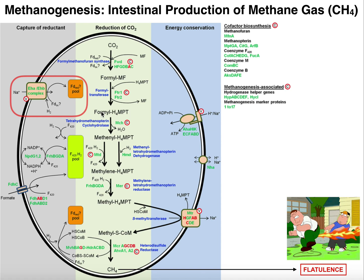This is now going to ultimately be cyclized into this molecule methenyl-tetrahydromethanopterin. This is catalyzed by tetrahydromethanopterin cyclohydrolase. We saw a cyclohydrolase that was present in tetrahydrofolate metabolism — this is basically the same enzyme that has multiple specificities — and it's going to cyclize this molecule into what's called methenyl-tetrahydromethanopterin.